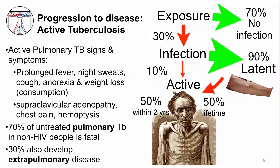Untreated, 70 percent of non-HIV infected people with TB disease will die. One-third will also demonstrate extra-pulmonary disease.